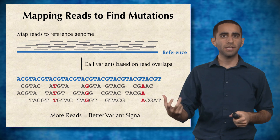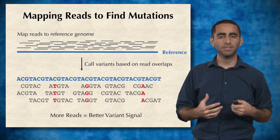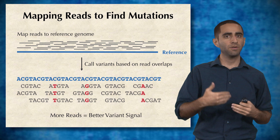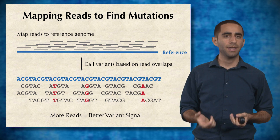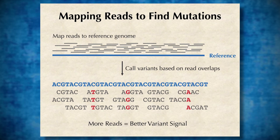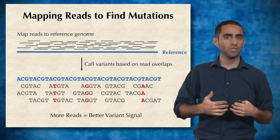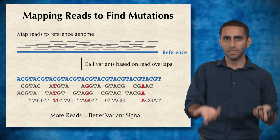Each of these reads can then be mapped to the reference genome to see what differences they have with respect to it. In this example, the reference genome is shown in blue and each of the black sequences is one of our reads. At certain positions, every single read that maps to that position has a variation — for example, a line of Ts where every read had a T where the reference genome had a C. This tells us that this individual probably has a T at this position, which would be marked as a single nucleotide variant.